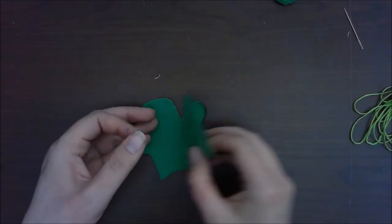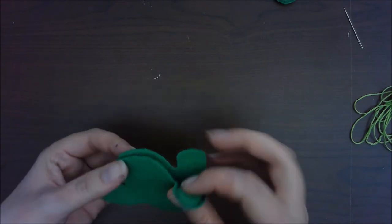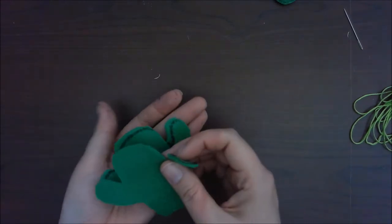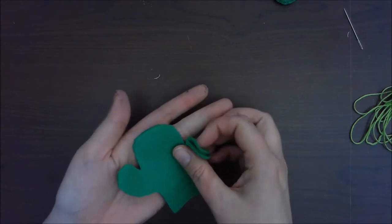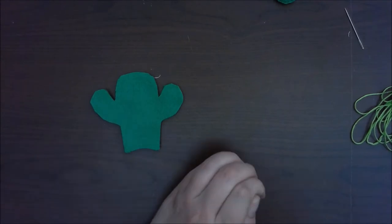Before getting started with the sewing, I'm going to flip over my pieces so that none of the black shows from where I traced. And we're going to work on the eyes and the face first before we actually sew around the cactus.